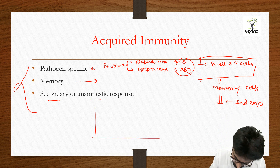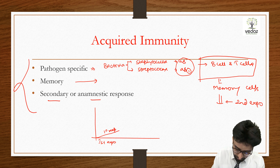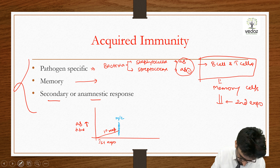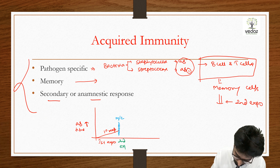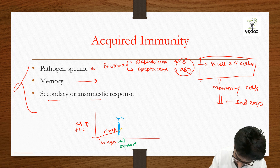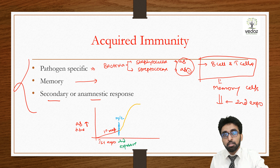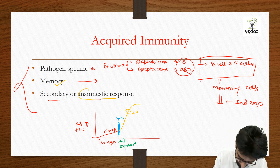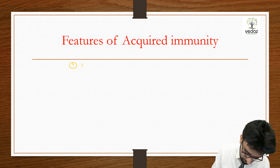The first time exposure is called the first exposure, and the response it generates is called the primary response. As you can see on the graph, the antibody titer — meaning the amount of antibody — is slow and weak in the primary response. Now when memory cells have formed in our body and the second exposure occurs, the body already knows who these pathogens are and how to tackle them. So in the case of second exposure, the response will be fast and strong — this is the secondary response, due to memory cells performing the anamnestic response.